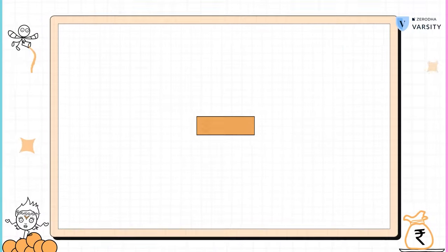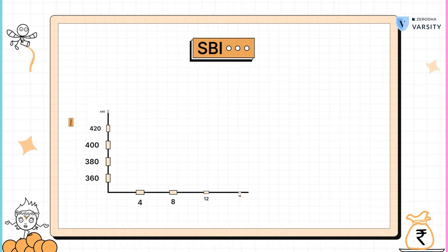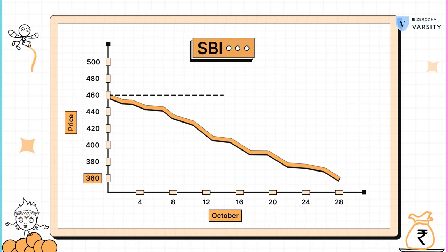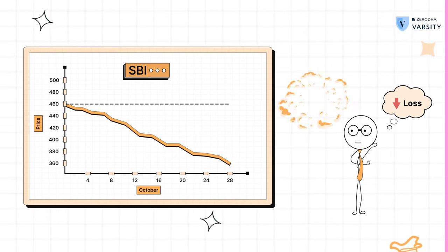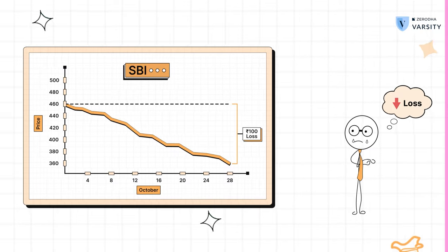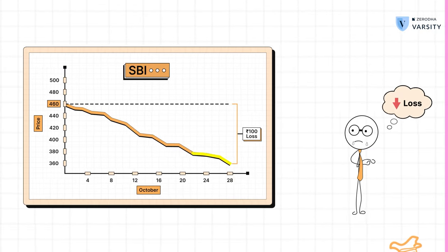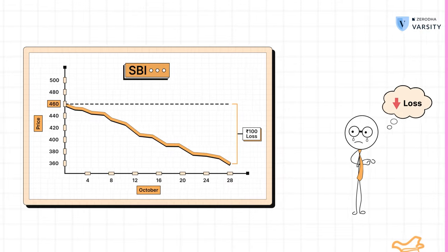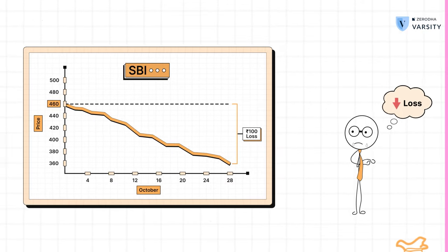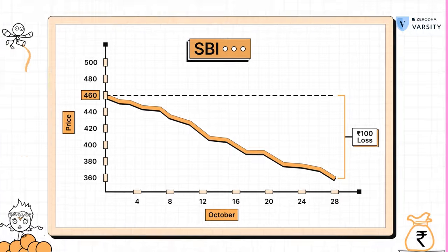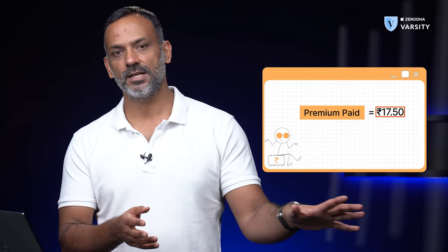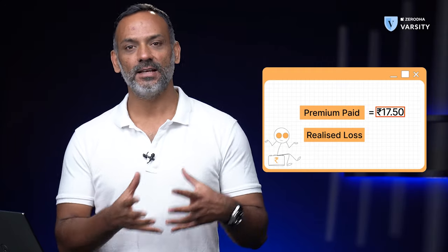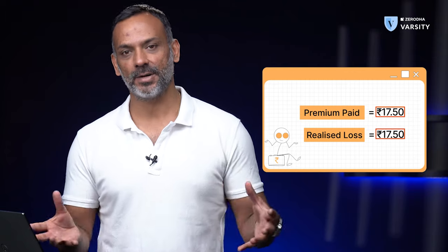The third outcome is that the price of SBI actually drops — let's assume it drops to 360. Clearly there is no point in exercising my right to buy SBI at 460 when I can buy the stock at a much lower price in the open market. Therefore, I'll forfeit my right to buy the option, which means the premium that I've paid will just get flushed down the drain. So again, the loss is 17 rupees 50 paisa.